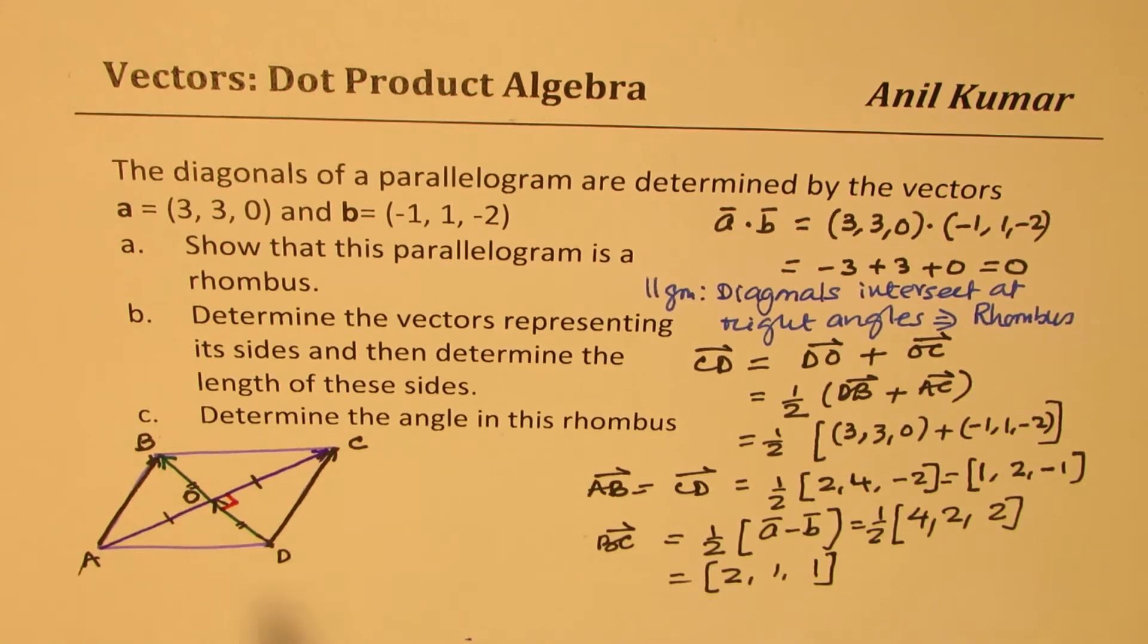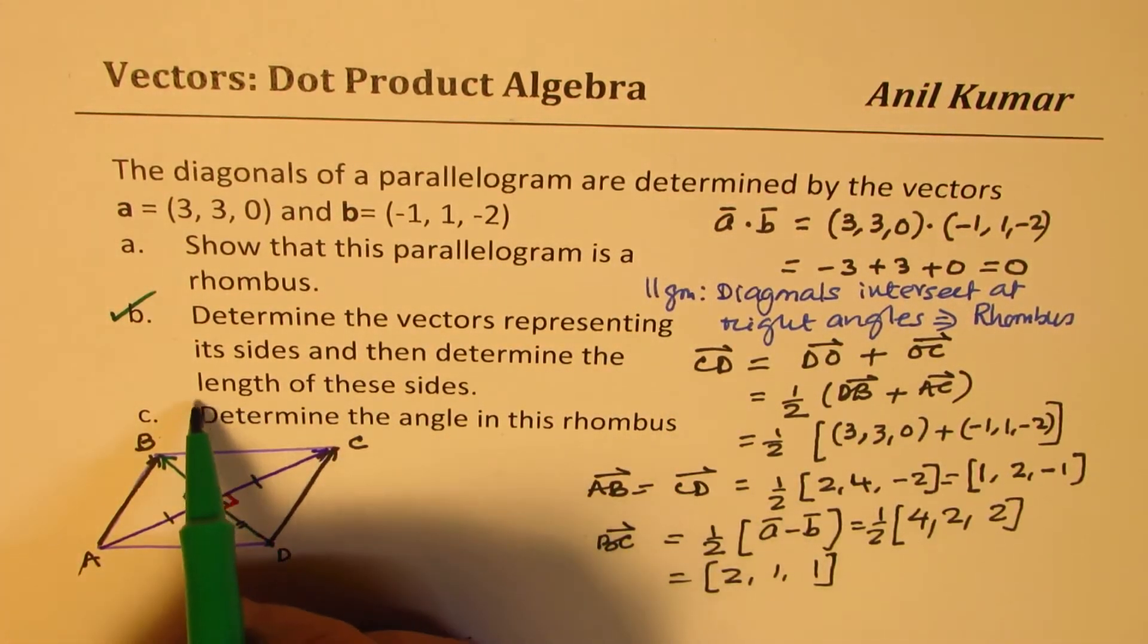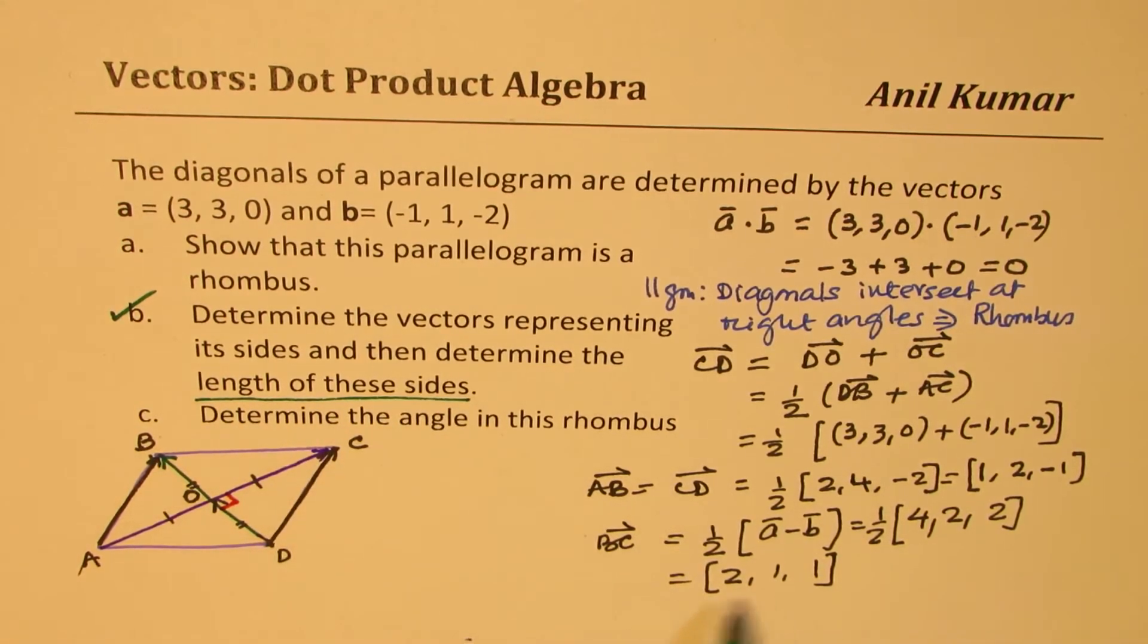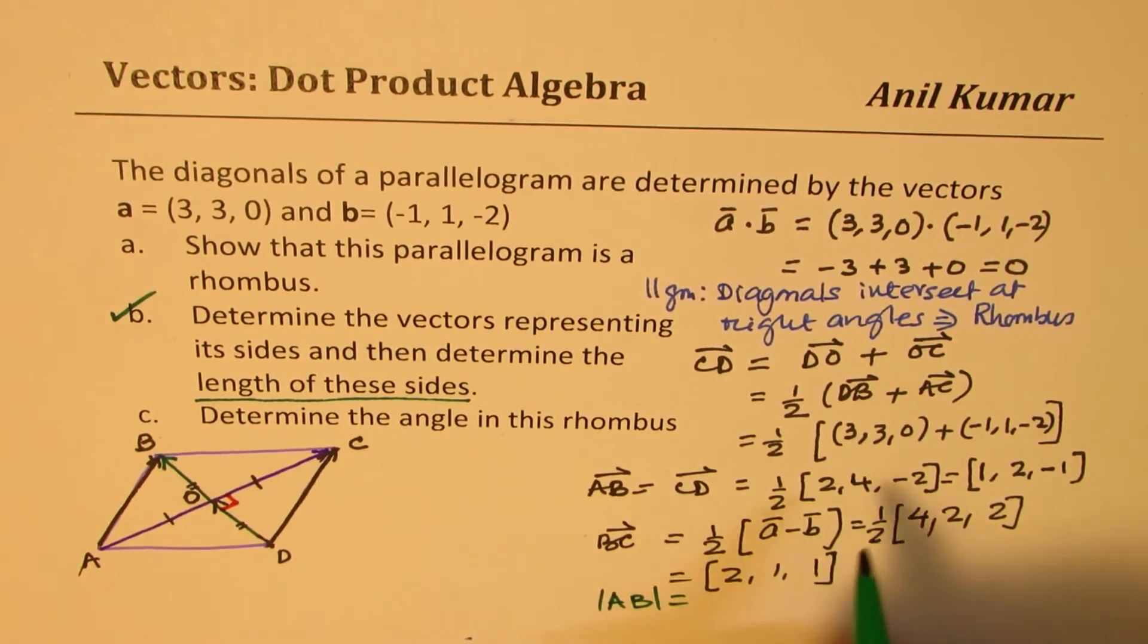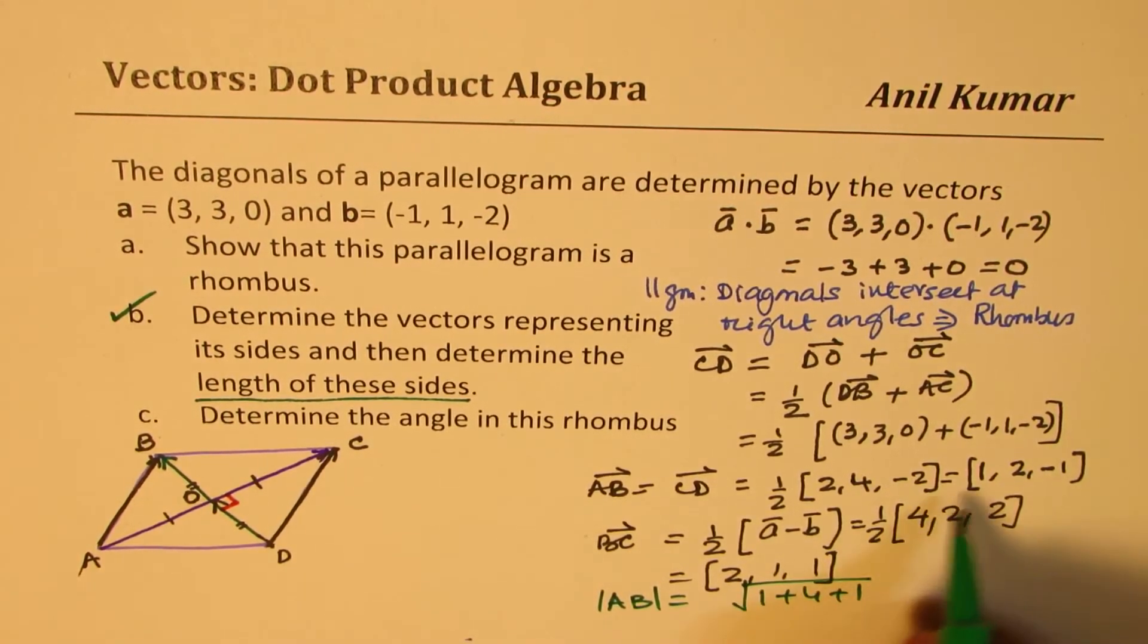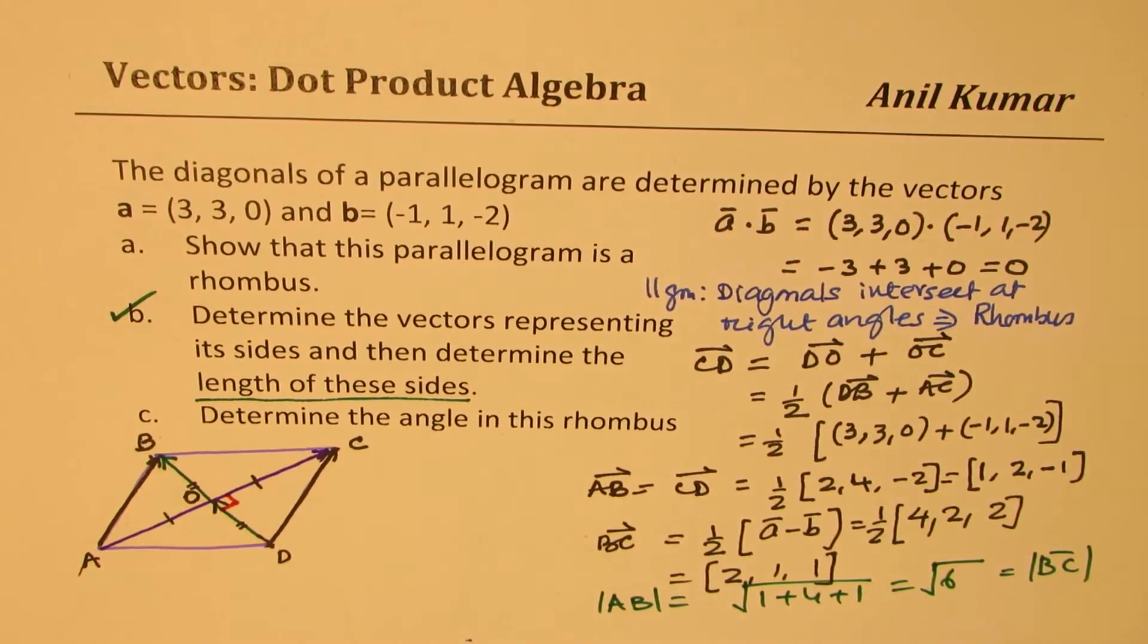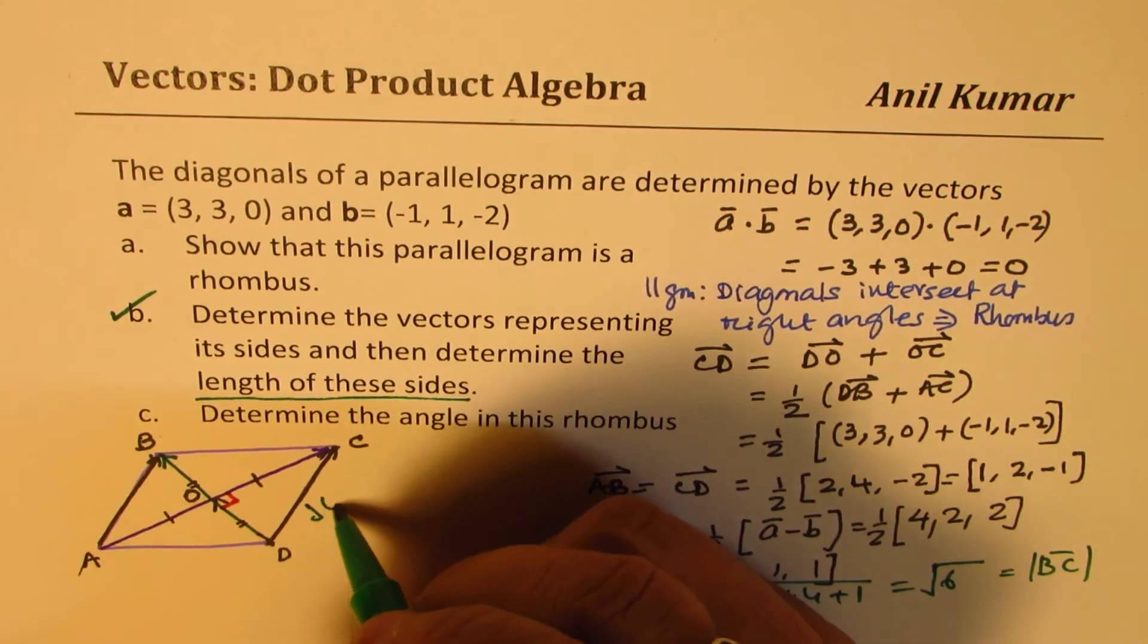Now once we get these two vectors, we can find the angle between them. So we have done the second part, which is finding the vectors. Well, we have to also find the length of these sides. So the length of this side is the magnitude. So let's find the magnitude. So magnitude of AB will be equal to square root of 1 plus 4 plus 1, which is square root of 6. And this is also equal to magnitude of BC. Since it is a rhombus, all the sides are equal in length. So each side is square root 6 for us.